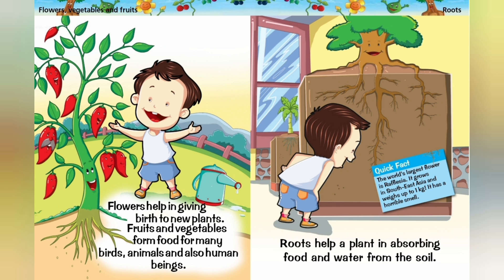Fruits and vegetables form food for many birds, animals and also human beings. The world's largest flower is Rafflesia. It grows in Southeast Asia and weighs up to 1 kg. It has a horrible smell.